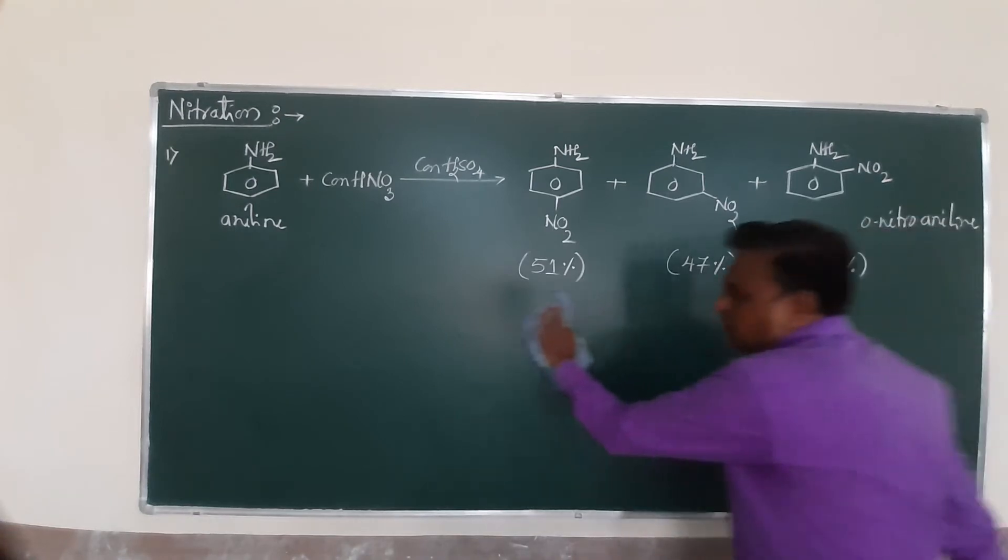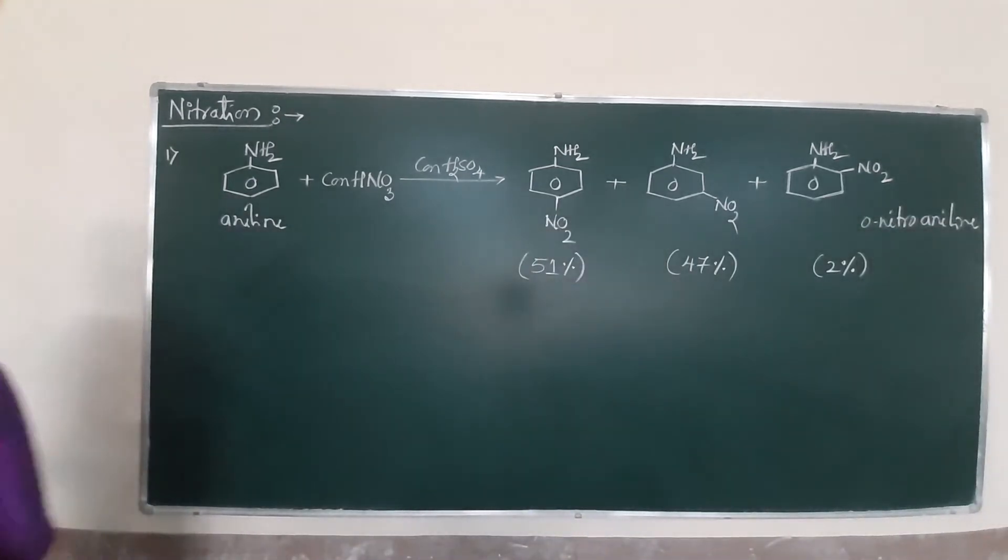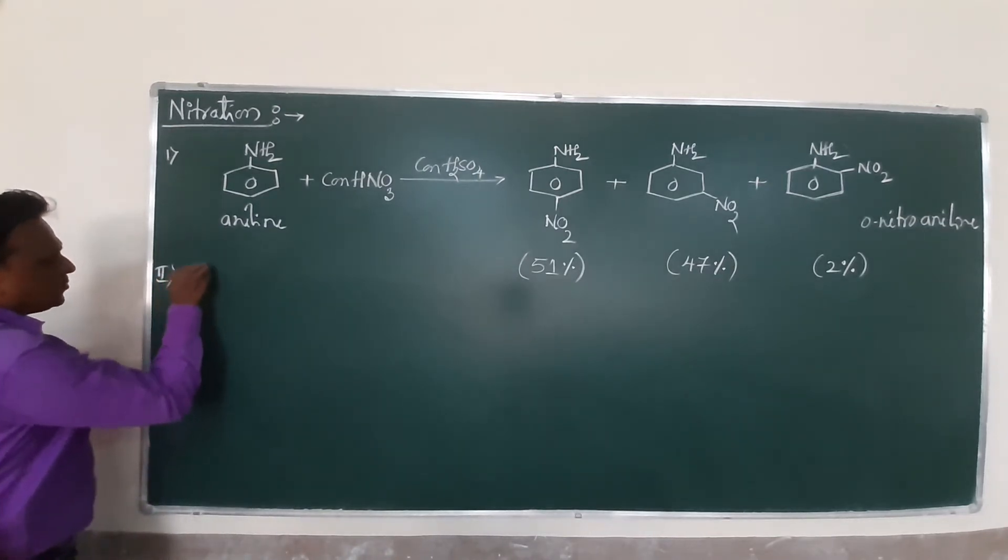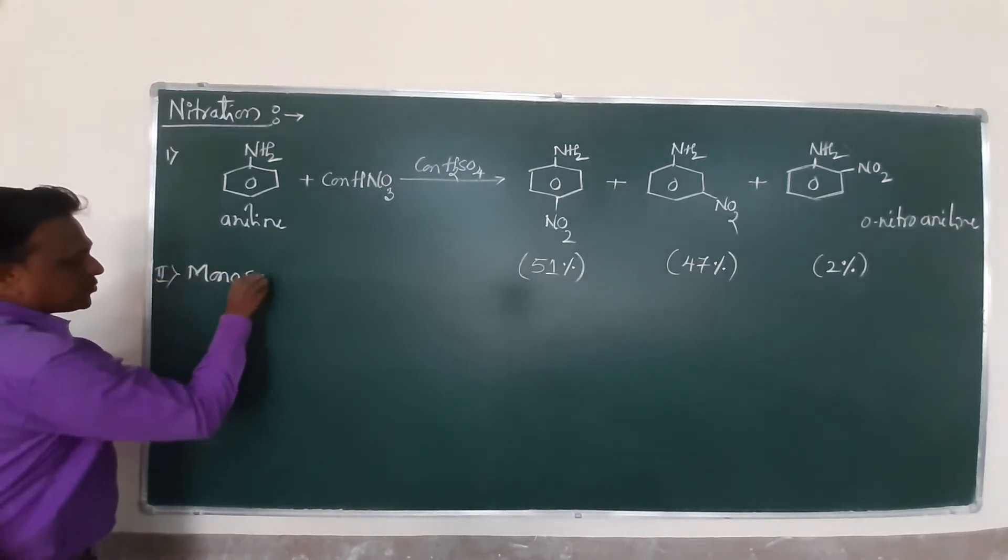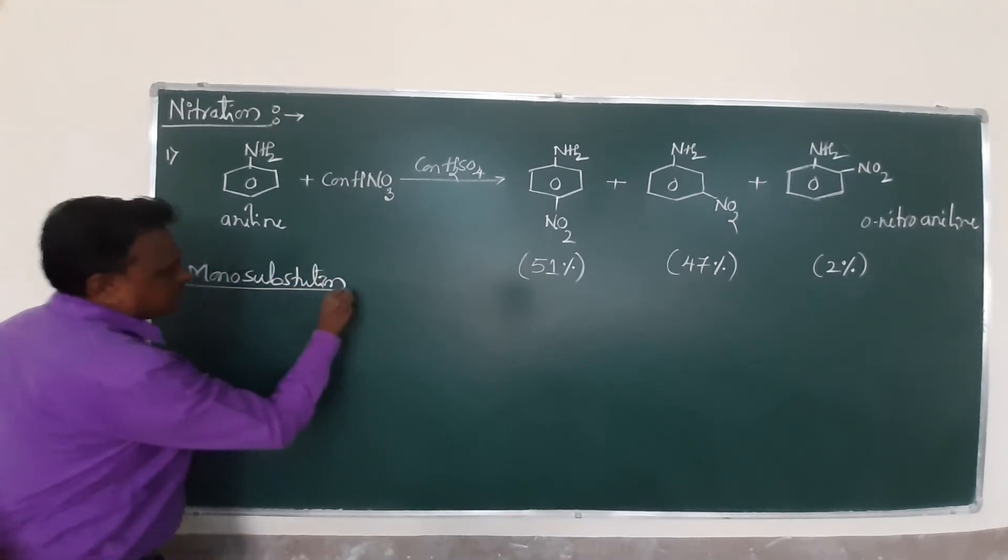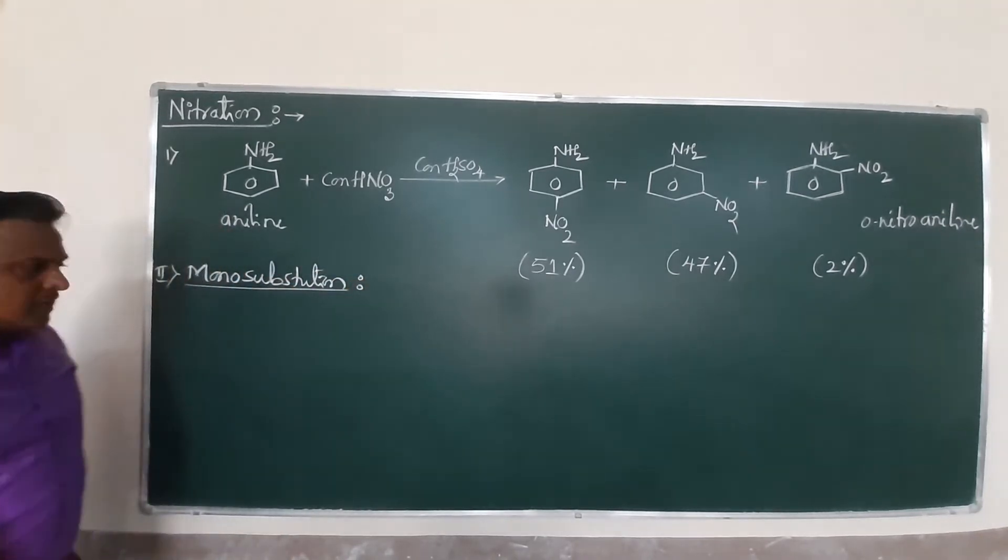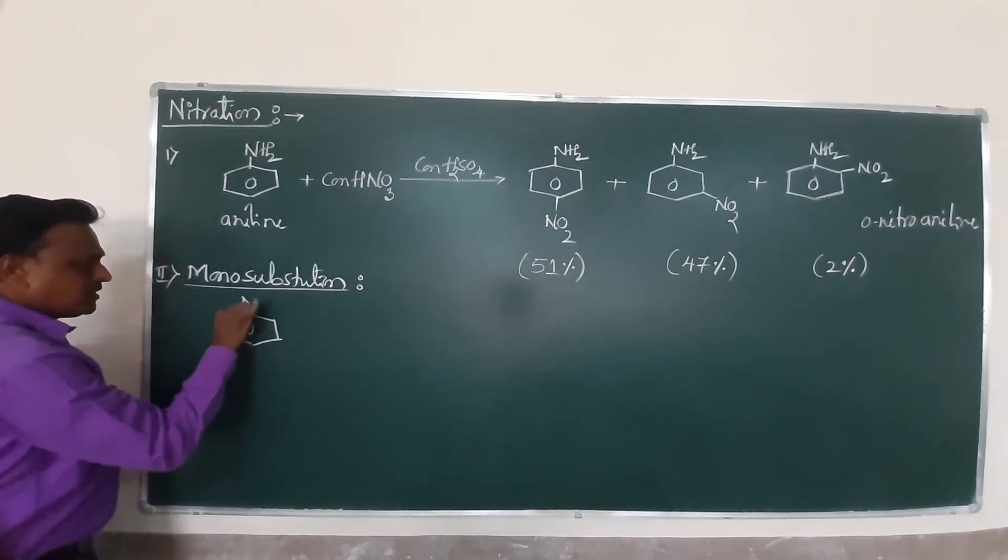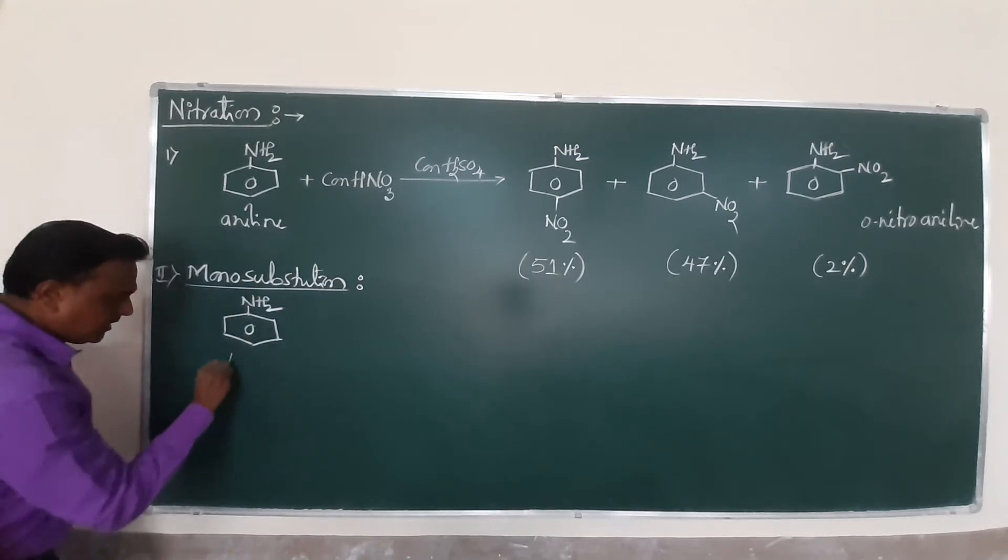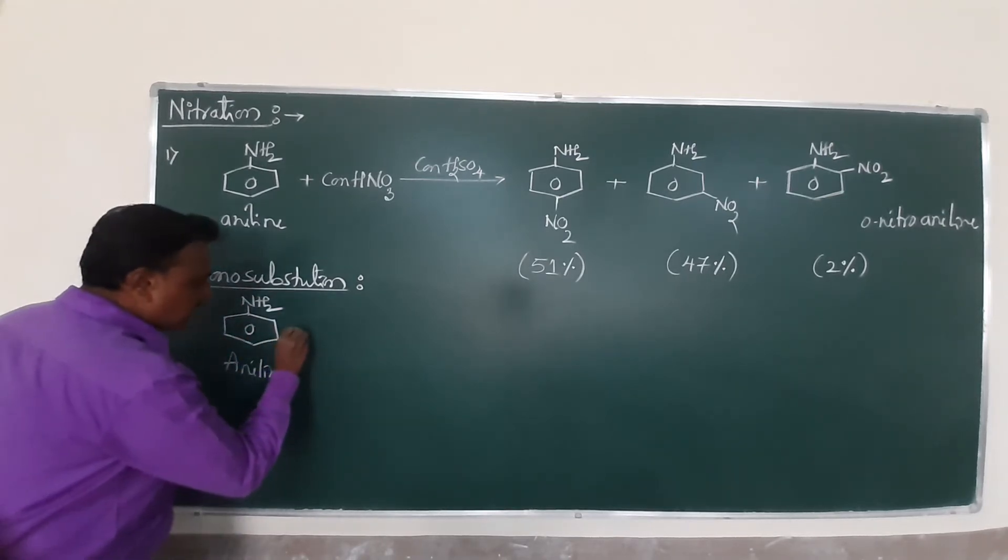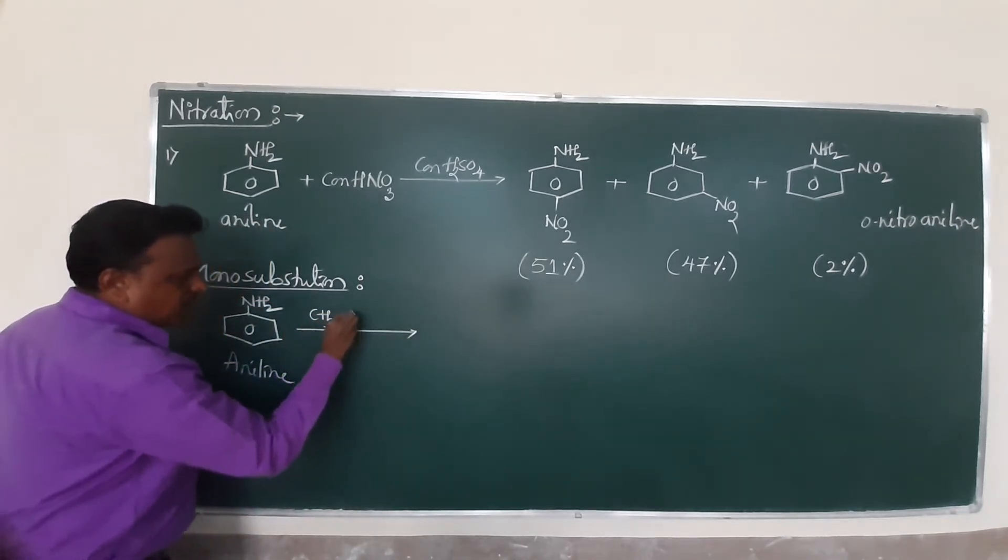And now, apart from this, it is a mono substituted nitration. We are going to be bromination. Mono substituted. How is mono substituted? Mono substituted nitration reaction. And similarly, we know in the last reaction, this is the word aniline.